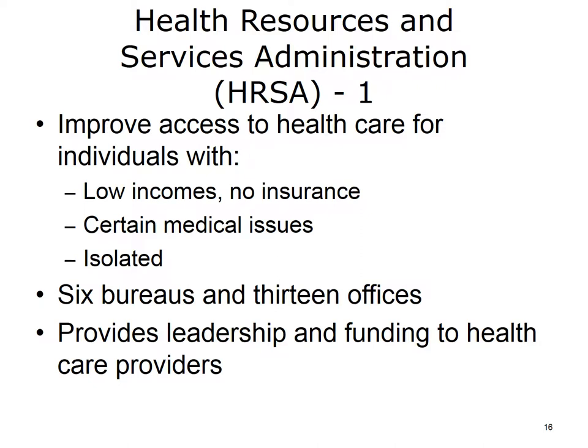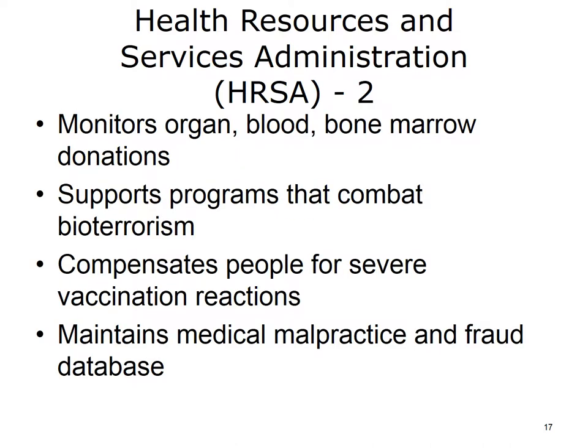The Health Resources and Services Administration, or HRSA, works to improve access to health care for individuals who are disadvantaged because of low income, lack of insurance, medical problems, or social isolation. With its six bureaus and 13 offices, HRSA provides leadership and funding for health care providers who treat uninsured patients, those with HIV or AIDS, pregnant women, special needs children, rural residents, and others. In addition, HRSA monitors national organ, blood, and bone marrow donations; supports programs to combat bioterrorism; compensates patients who sustain severe vaccination reactions; and maintains databases to prevent medical malpractice and fraud.